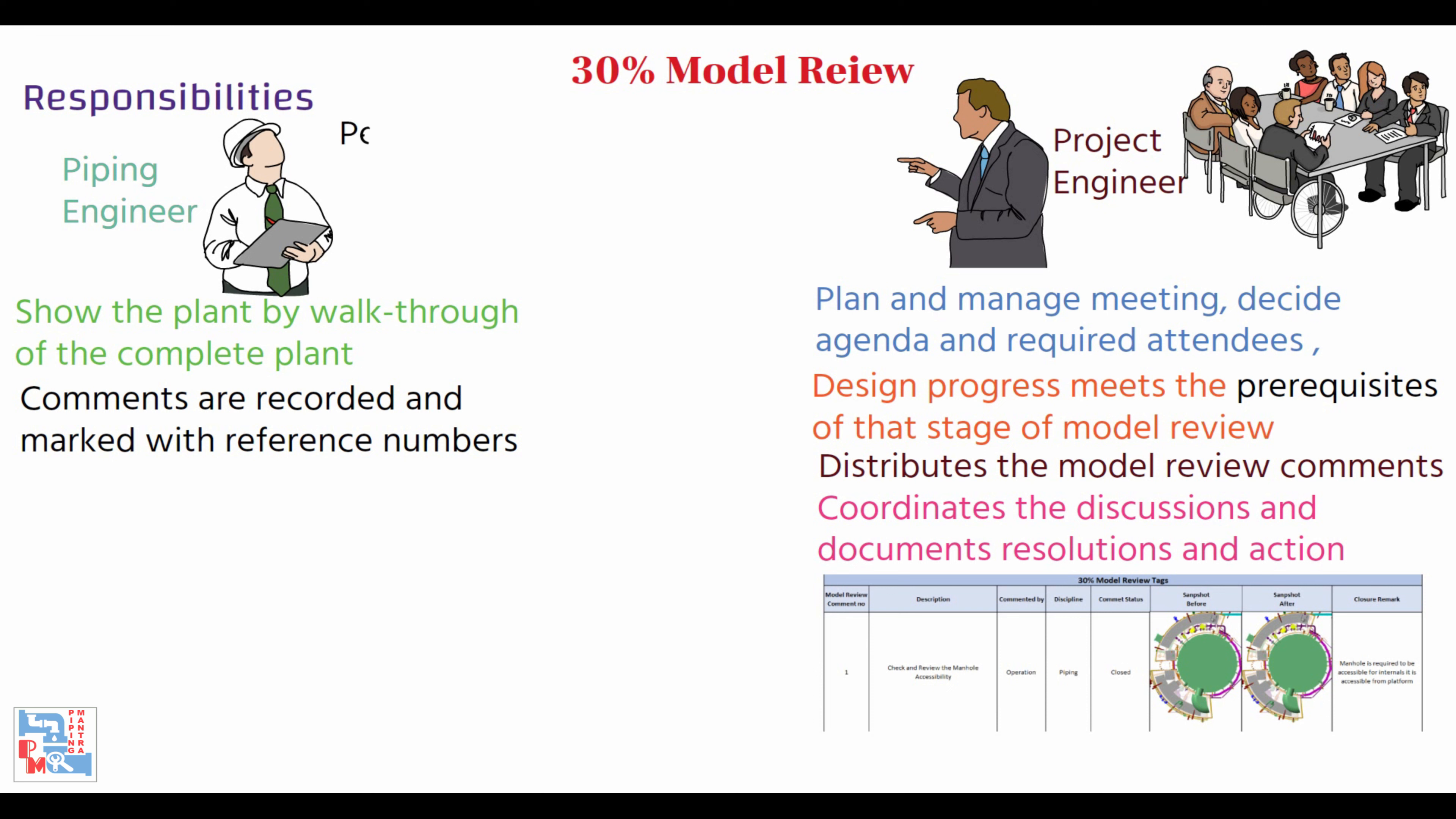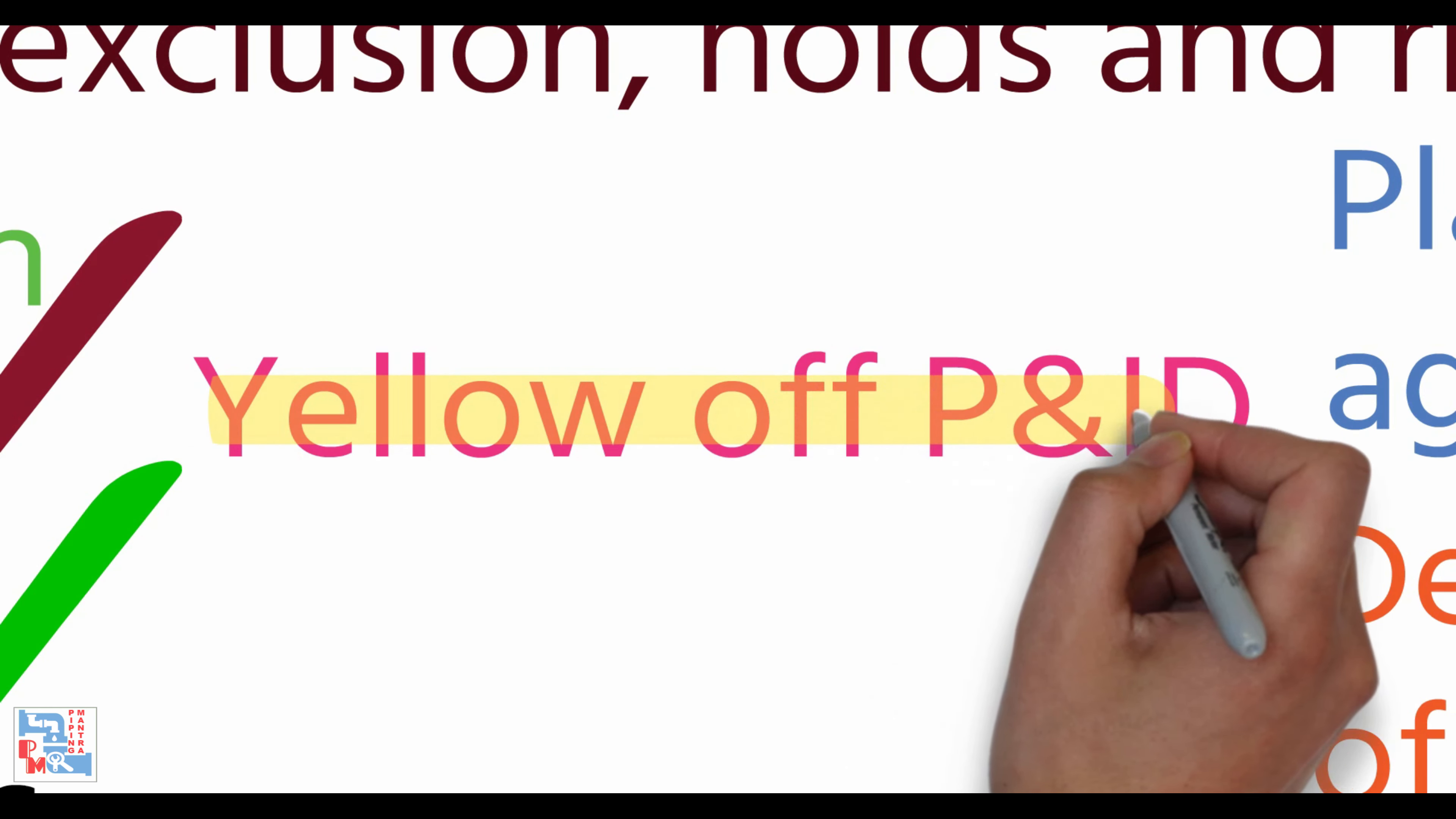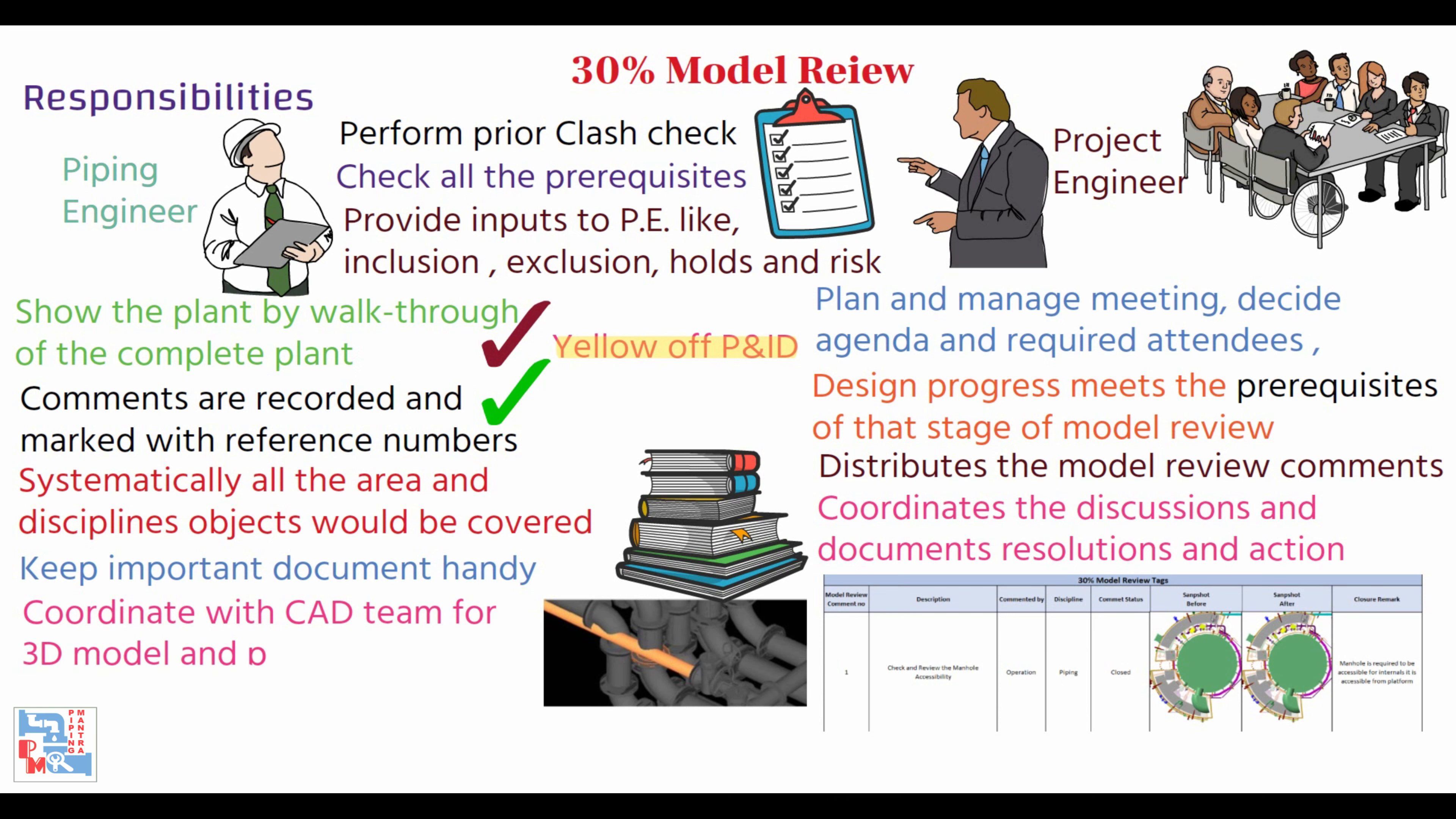The piping engineer will drive 3D model, perform prior class check, check all the prerequisites, provide inputs to the project engineer like inclusion, exclusion, holds and risk based on unavailability of data. Capture all the comments in the form of tags or action items along with the snapshot of the model. Plan model walkthrough in an intelligent manner so that systematically all the area and discipline objects would be covered. Yellow off P&IDs—that is, the lines that are part of 30% model review. Keep important documents handy, coordinate with the CAD team for the 3D model and plan its cutoff date.